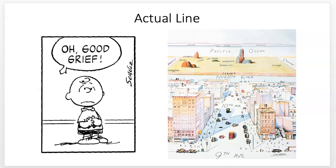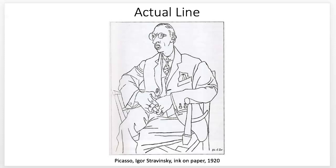There are a lot of different types of line. Actual line is the most obvious — it's a series of connected points that's continuous as it moves along. It is what it seems to be; it's actually there, not hiding itself. It could be in black and white or color, with tones. Here's another example — Picasso. These are all actual lines; they're fully there.